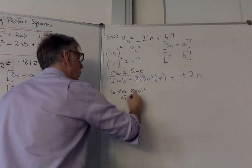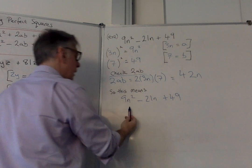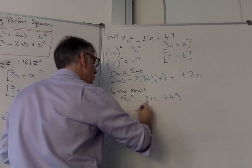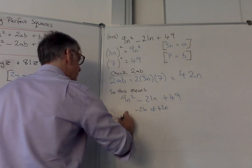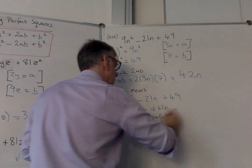So what does that mean? Well, if we compare it to the original equation, that's good. That's good. But the problem here is that minus 21n does not equal 42n. So it is not a perfect square.